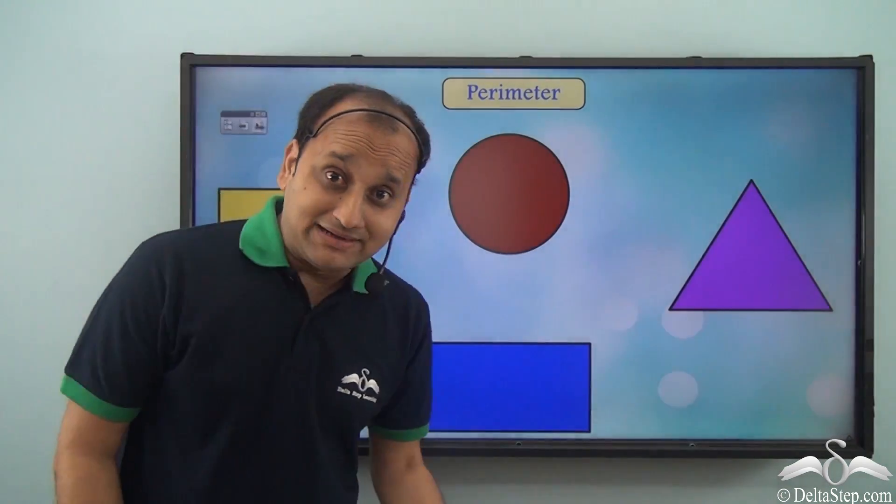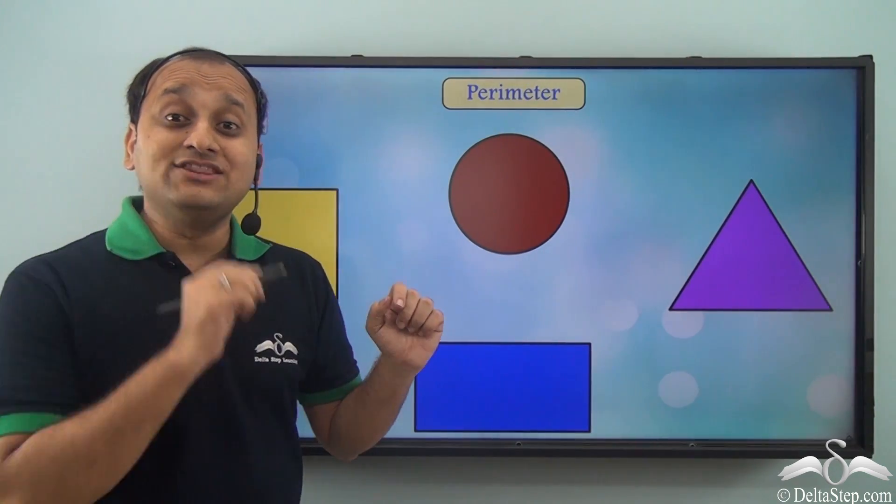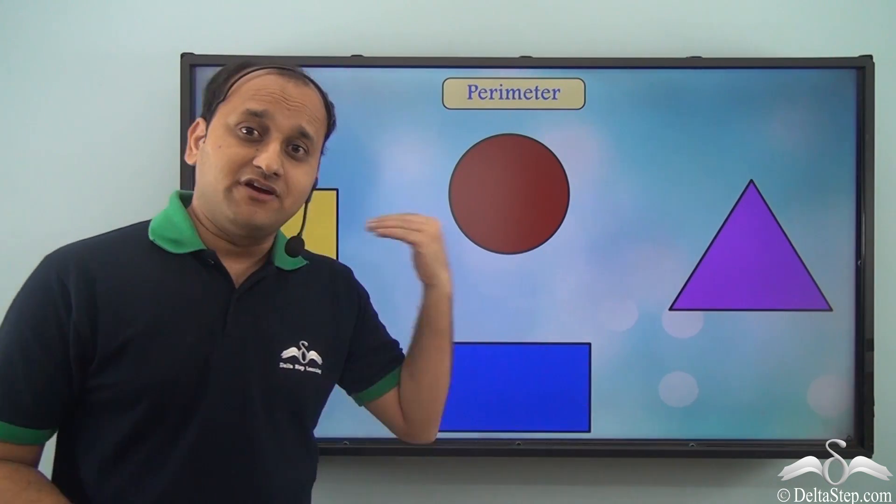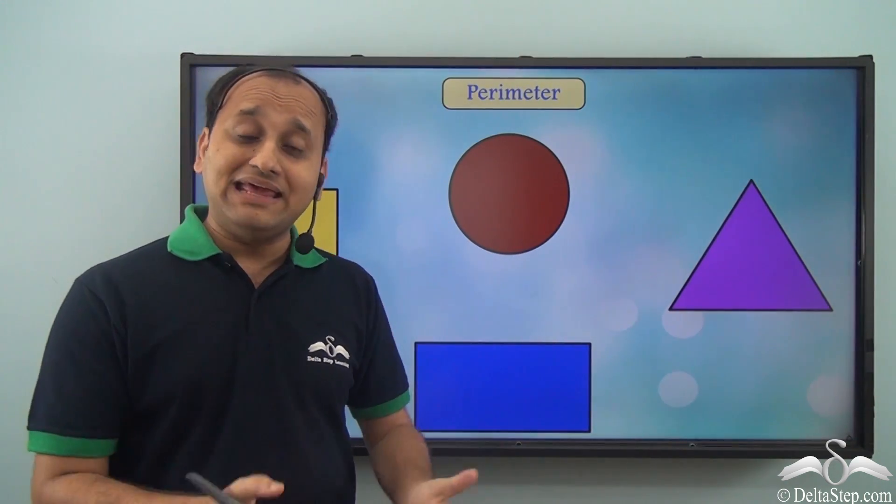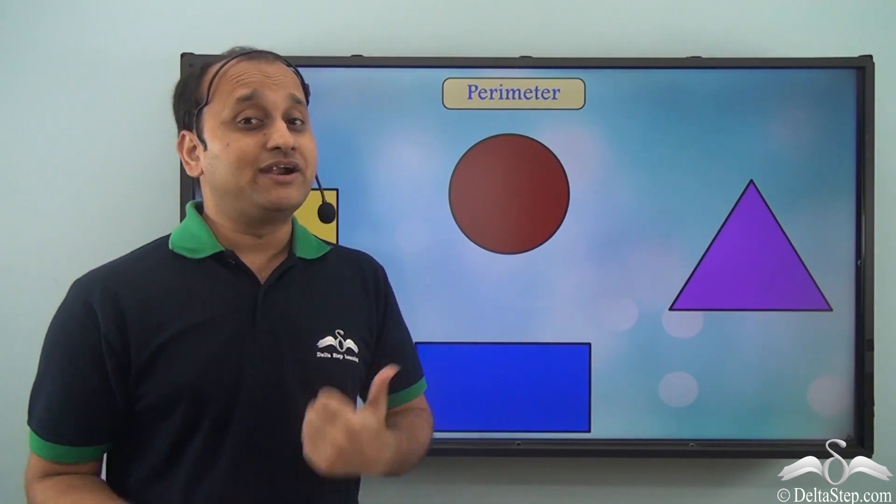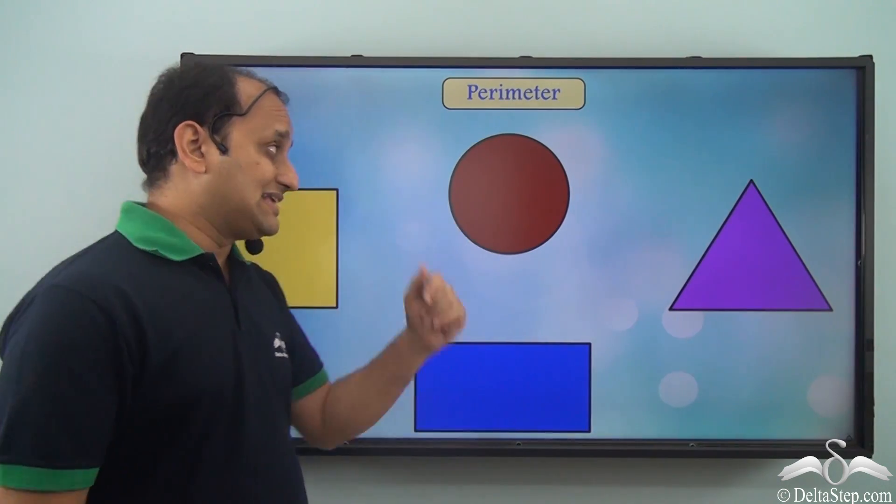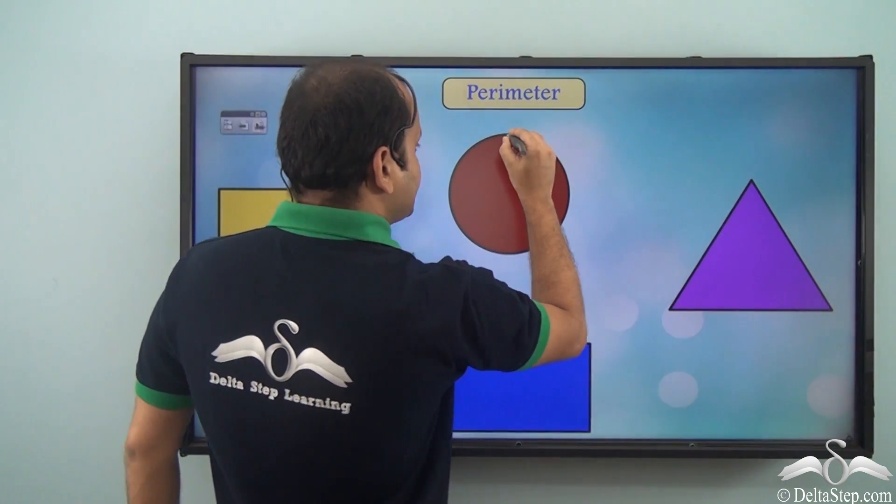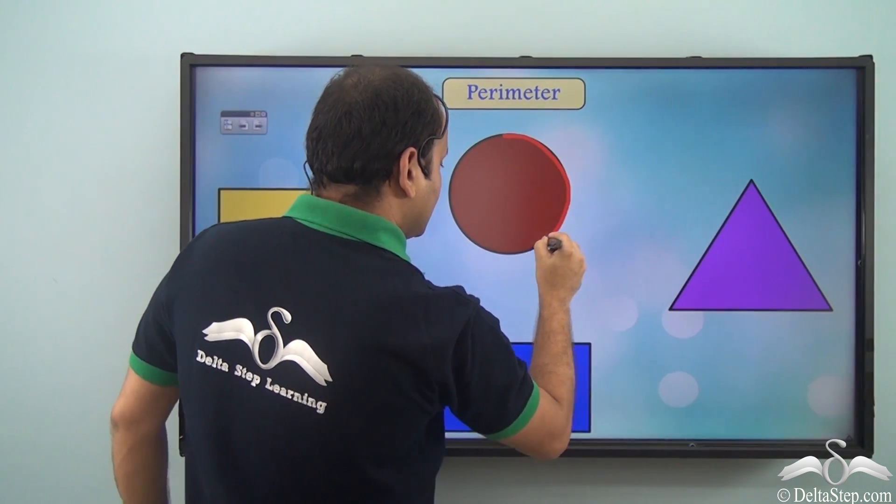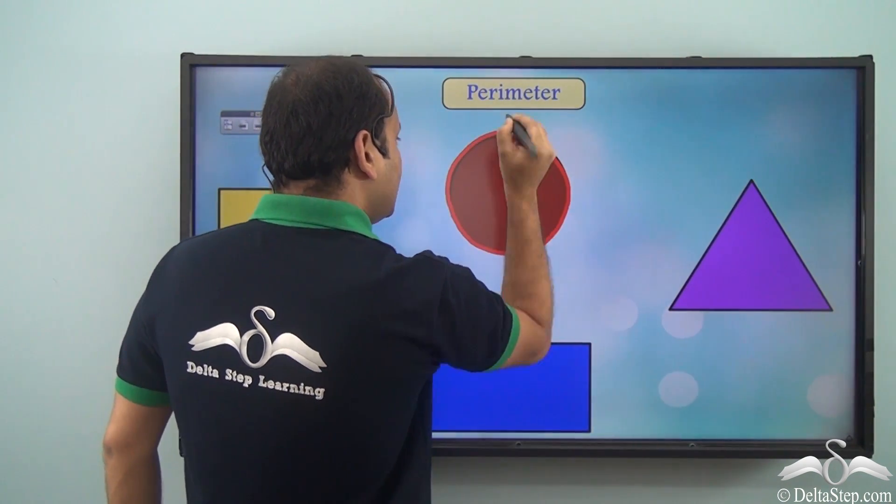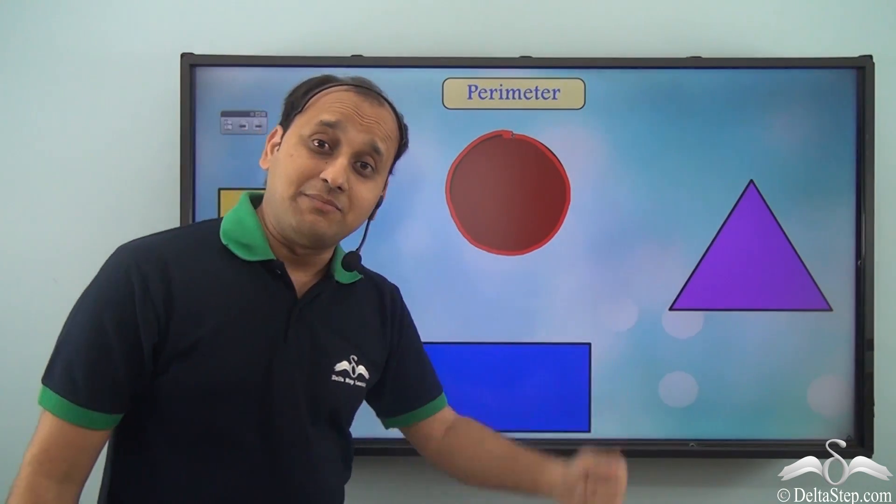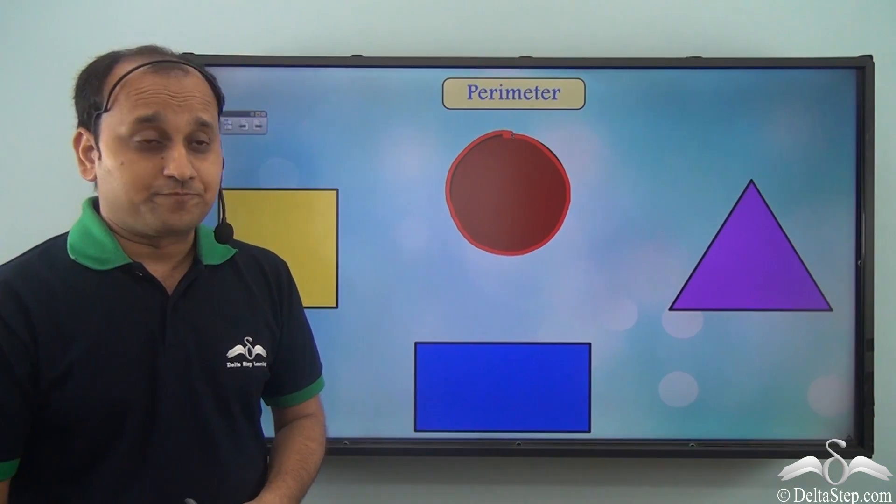So you see, perimeter is the length of the boundary. Now, whichever shape you have, if you can find the length of the boundary, that will be the perimeter of that particular shape. For example, here we have a circle. Now, if you can measure the boundary of this circle, length of the boundary of this circle, then it will be perimeter of this particular shape.